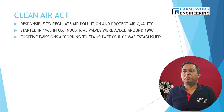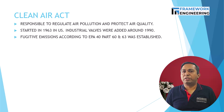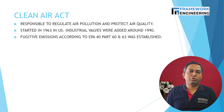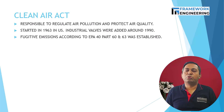Part 63 establishes maximum achievable control technology — MACT — standards for emissions of hazardous air pollutants from specific source categories. Hazardous air pollutants are known or suspected to cause cancer or other very serious health effects. Examples include benzene, formaldehyde, mercury, lead, and others. These standards apply to both new and existing sources of hazardous emissions in industries such as chemical, refinery, pharmaceutical, and others. This part requires affected sources to use the most effective control technology and practices available to reduce emissions to the lowest achievable level.